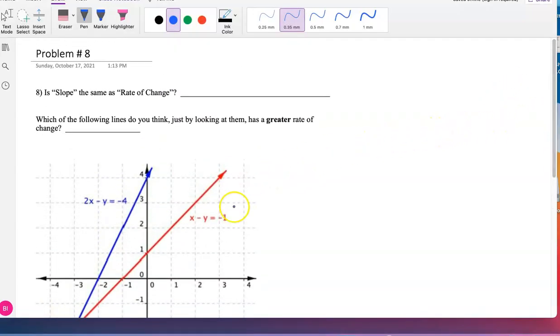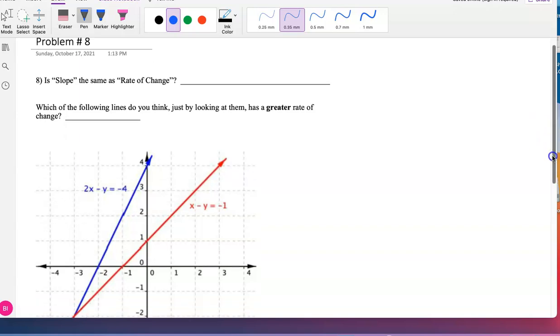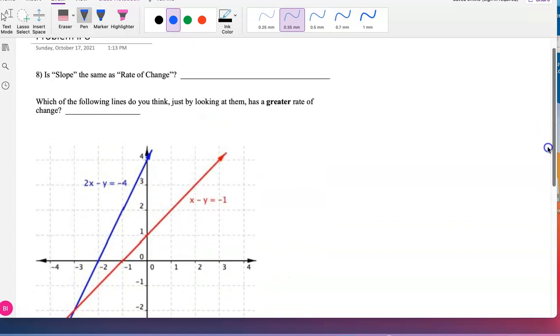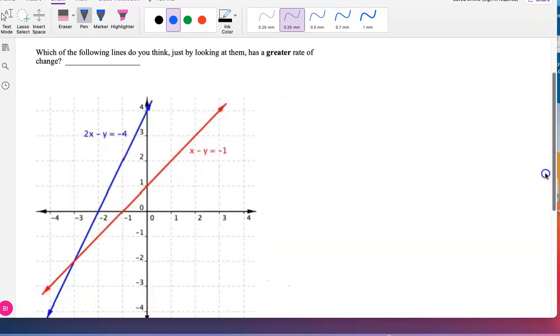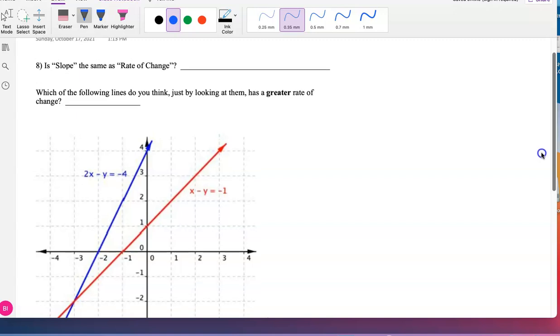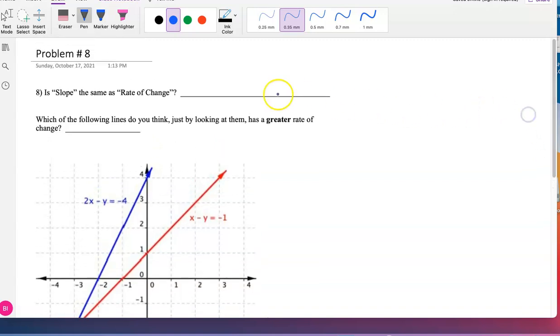Here you have graphs of two lines, and you are asked to find which of the following lines do you think, just by looking at them, has a greater rate of change.